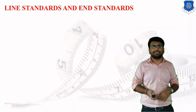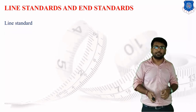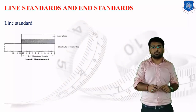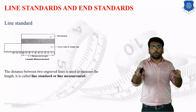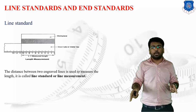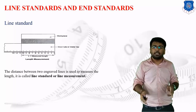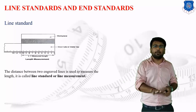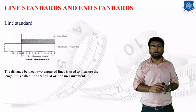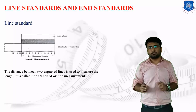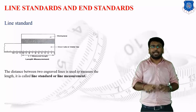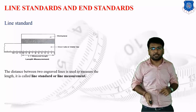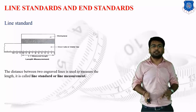The next topic is line standard and end standard. Line standard means the distance between two engraved lines which is used to measure length. Suppose you take a plain paper and draw two lines — to measure the length between these two lines, you simply take a routine scale, place it over the lines, and measure the length. This measurement is known as line measurement. The instruments used for this kind of measurement are known as linear instruments, and the standards followed are known as line standards. Basic conventional scales are line standard instruments.